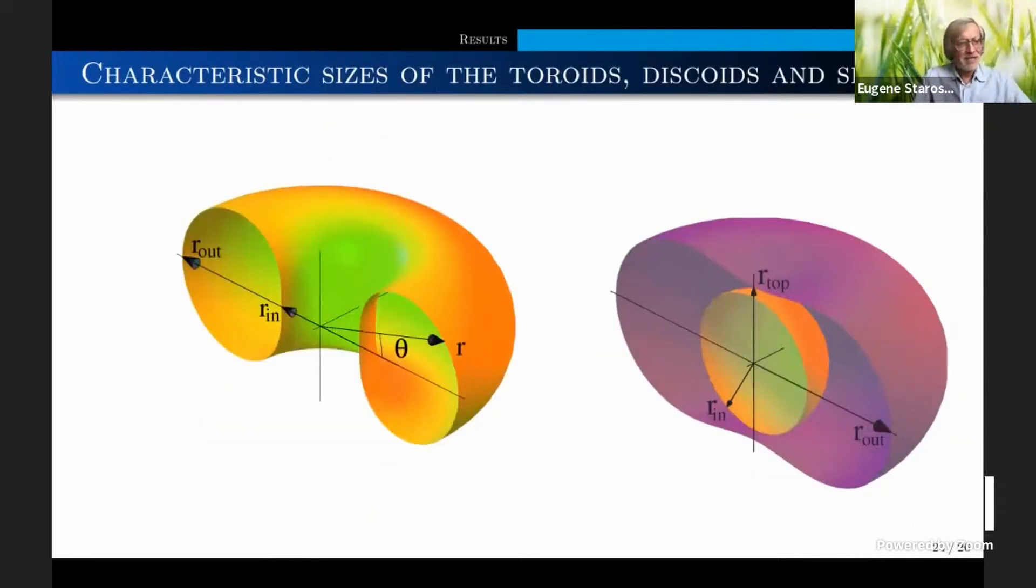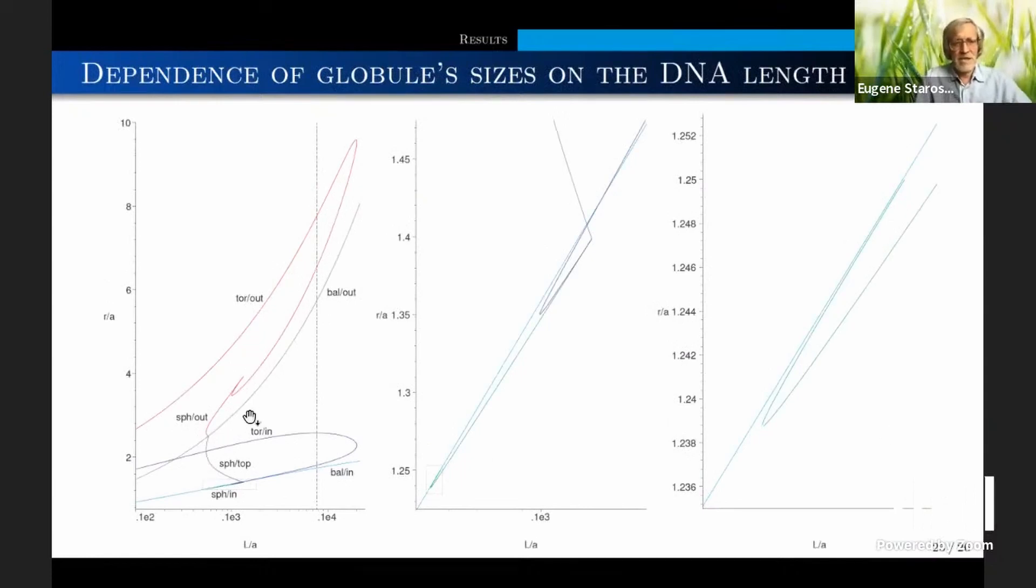Now, what about the real sizes of all these structures? This picture just shows the notation. The inner and outer radius of the toroid, and the discoids or spheroids, they are coded with three radii. The radius of the inner ball, the top radius, and the outer, the maximal radius of the outer surface. Here we see all the radii. All these curves present the radius as function of the length of the DNA, or not the volume, to the one-third power, but length, normalized by A. A is the thickness.